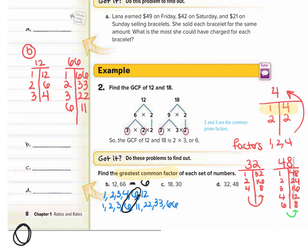For 32 we had 1, 2, 4, 8, 16, and 32. For 48 we had 1, 2, 3, 4, 6, 8, 12, 16, 24, and 48. So now we want to look for the biggest one that they both have in common, which would be 16.